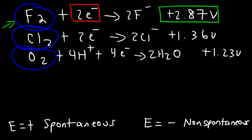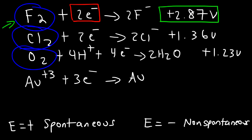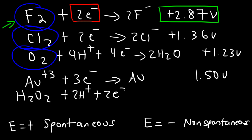These nonmetals are very strong oxidizing agents. Even the gold(III) ion is a strong oxidizing agent — the cell potential for that half reaction is 1.5 volts, which is stronger than oxygen and chlorine. Another powerful oxidizing agent is hydrogen peroxide; under acidic conditions it has a very powerful desire to strip electrons from something, with a cell potential of 1.78 volts.